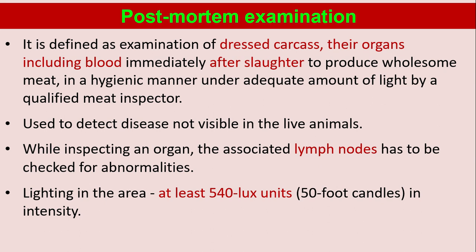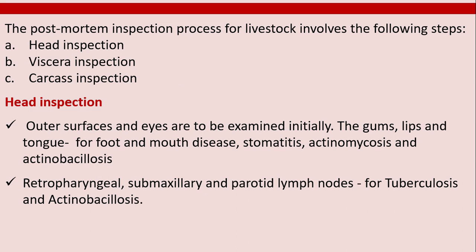Post-mortem examination is used to detect disease not visible in the live animal. While inspecting an organ, the associated lymph nodes must be checked for abnormalities. Lighting in the area should be at least 540 lux. The post-mortem inspection process for livestock involves: head inspection, viscera inspection, and carcass inspection.